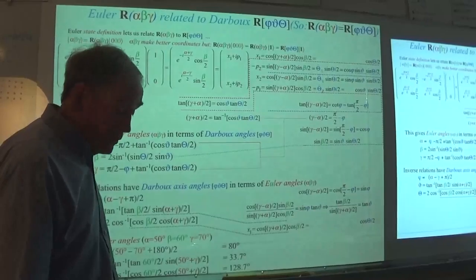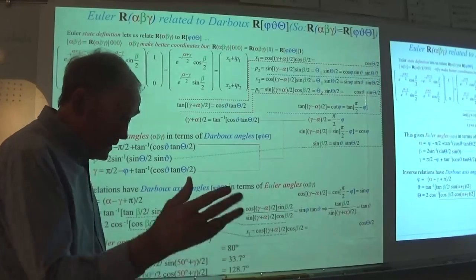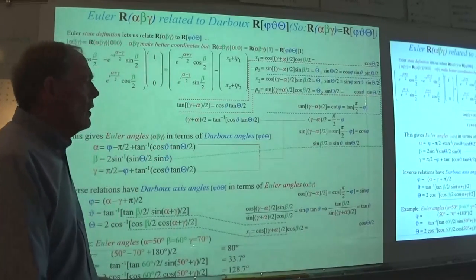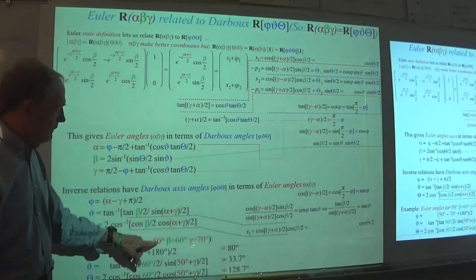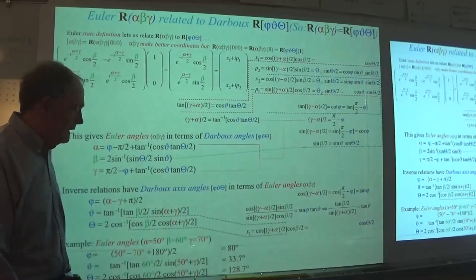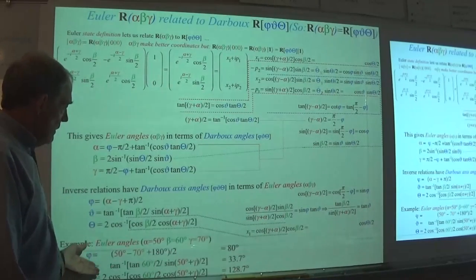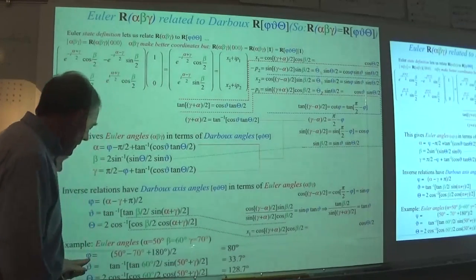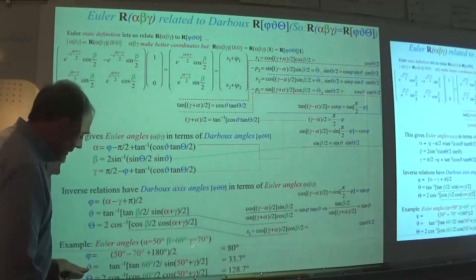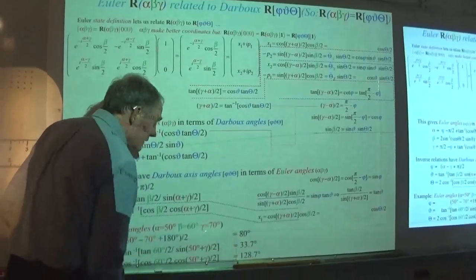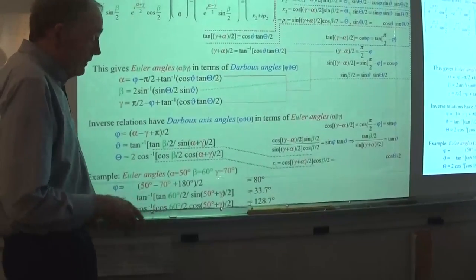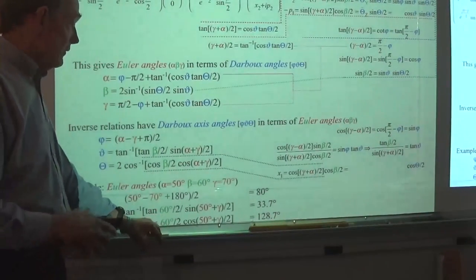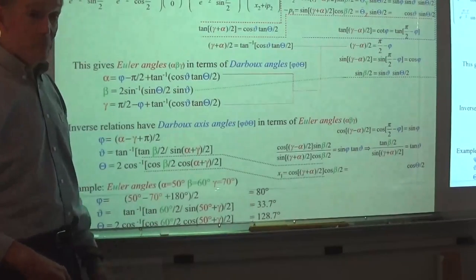Let me test this by actually performing the rotation. I'll set alpha to 50, beta to 60, gamma to 70, and the formulas say I should see the crank azimuth at 80 degrees, theta at 33.7, and that I have to turn 128 and change to get to that particular position from zero. So that's the deal. Obviously something like this you definitely have to test.